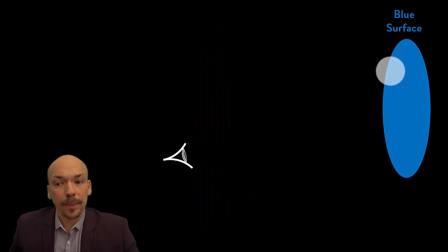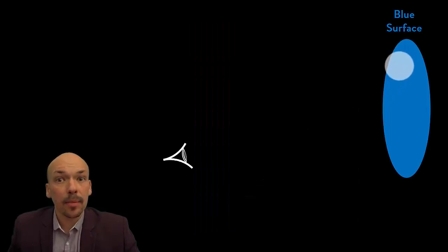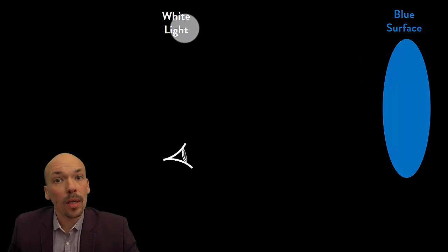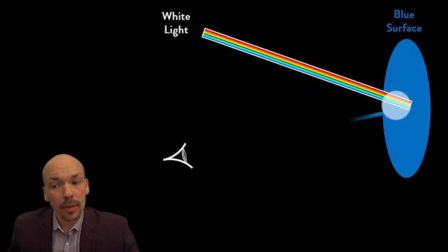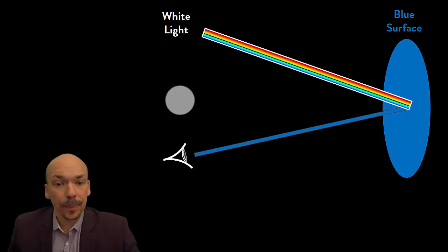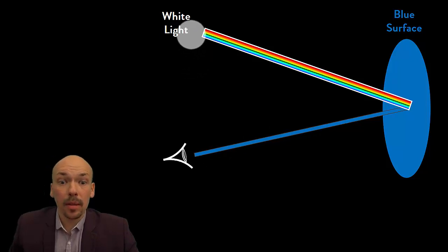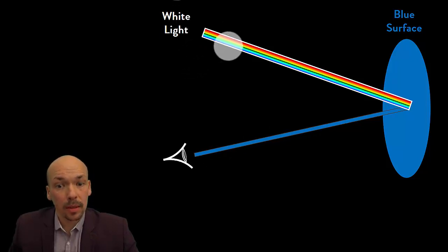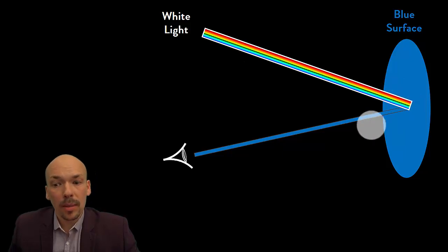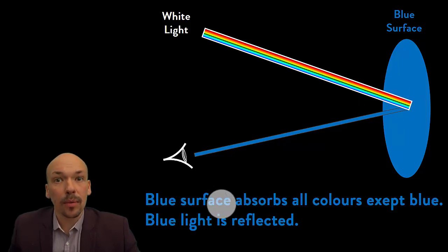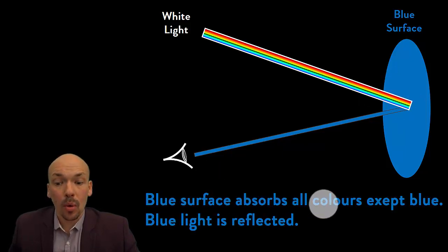If we have this blue surface, we can see it only when light is shown upon it. So if we have white light shining upon the blue surface, we can see that it's blue. All the colors in white light hit the blue surface, and only blue is reflected, because the blue surface absorbs all colors except blue.